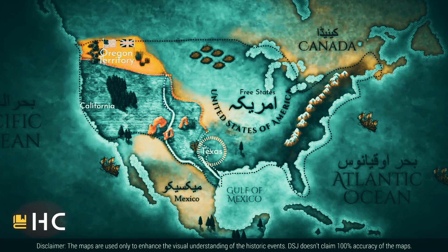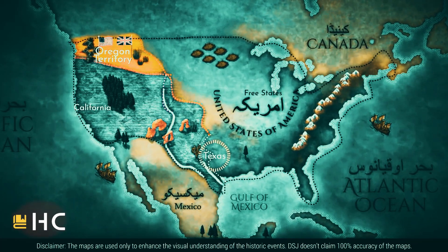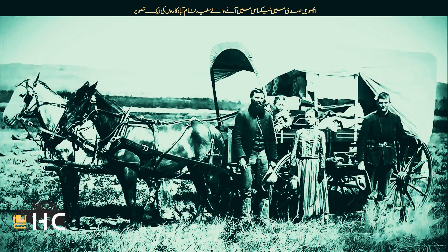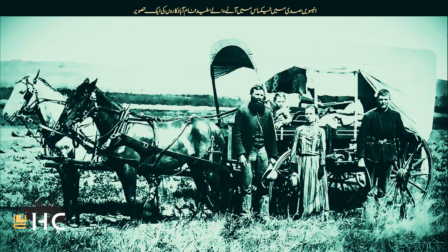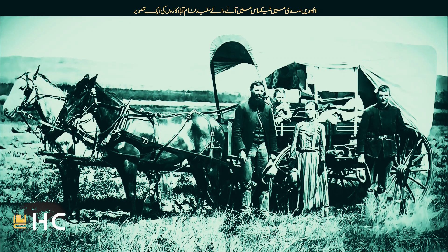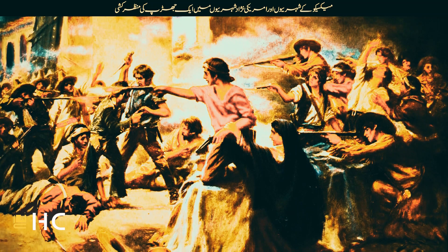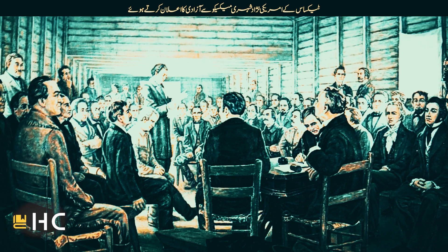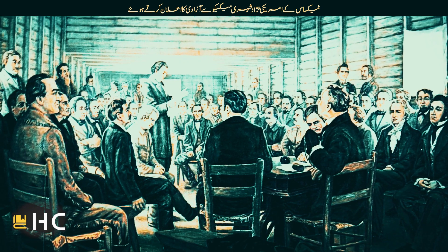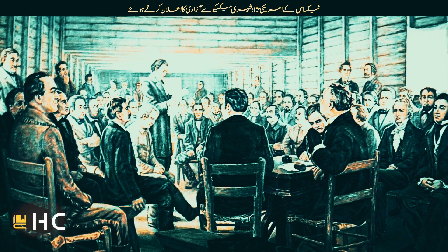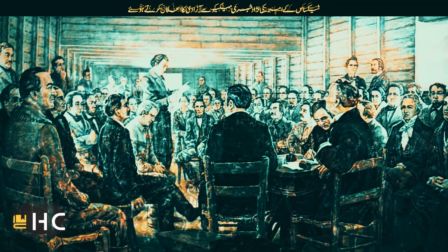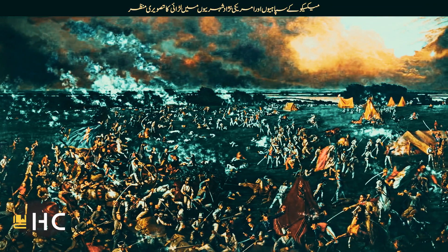Texas was a large region when Mexico gained independence from Spain in 1821, and it became part of Mexico after independence. Four other states in America were also part of Texas at that time. But Texas had only a small population, so Mexico invited white people from America to live in Texas. Americans settled in Texas, and within a few years the population was larger than the local Mexican population. These Americans had disputes with the Mexican government — slavery was the major reason, as Mexico had banned it after independence.